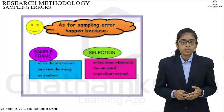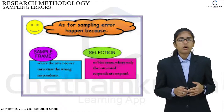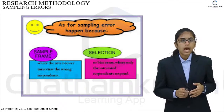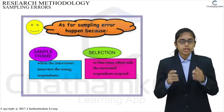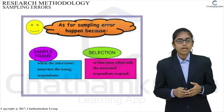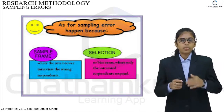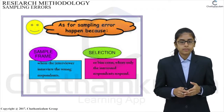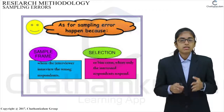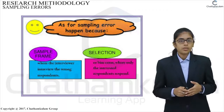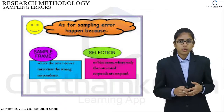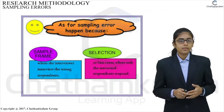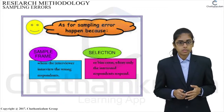Sampling error exists due to the fact that only a subset of the population has been used to estimate the population parameters and draw inferences about the population. Thus, sampling error is present only in a sample survey and is completely absent in the census method.